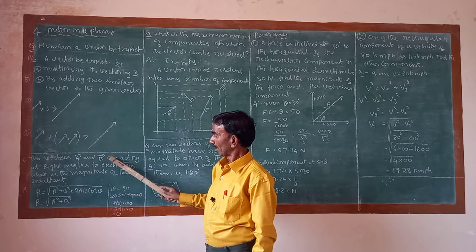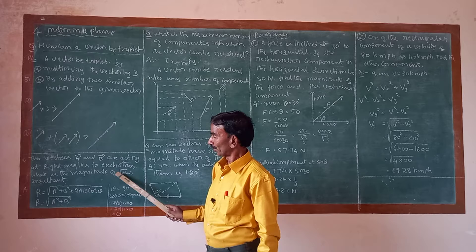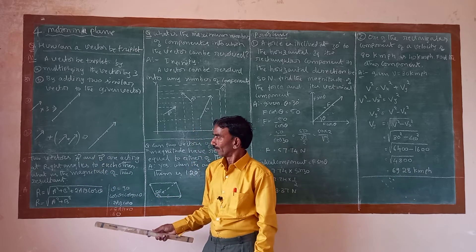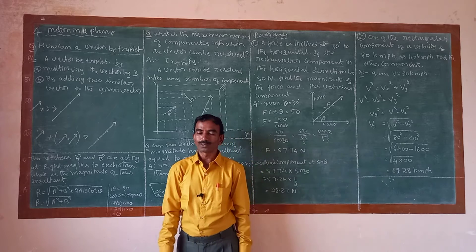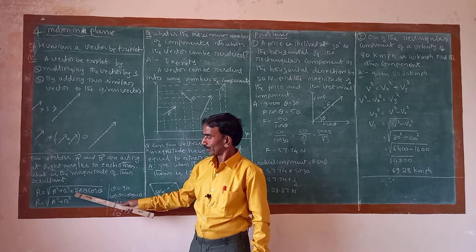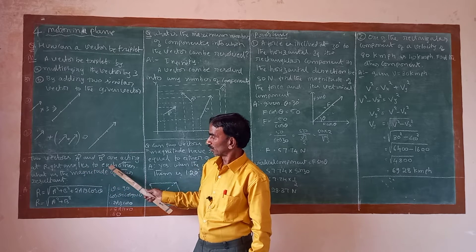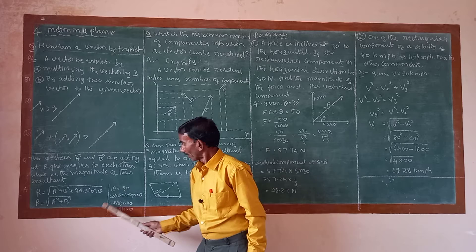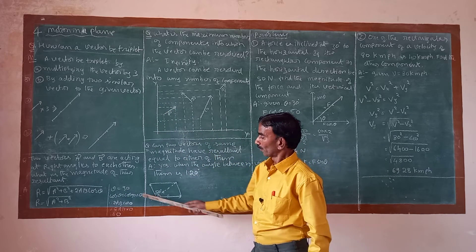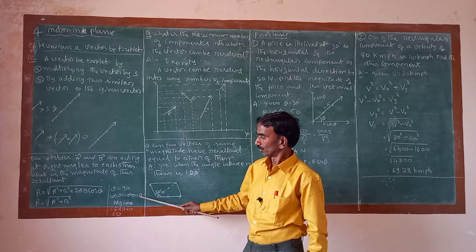Next question: two vectors A and B are at right angles to each other. What is the magnitude of the resultant? The magnitude of the resultant is given by the square root of A squared plus B squared plus 2AB cos theta. At right angles to each other, theta is equal to 90 degrees.